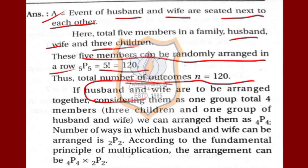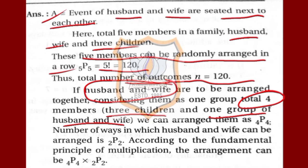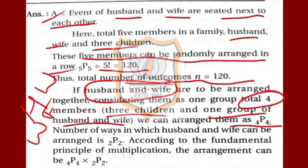If we consider husband and wife as one group, the total members become three children plus one group — that is four members. These four members can be arranged in 4P4 ways. The husband and wife within that group can be seated as husband-wife or wife-husband, so they can be arranged among themselves in 2P2 ways. By the principle of multiplication, the arrangement is 4P4 × 2P2.